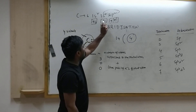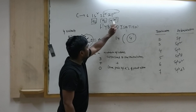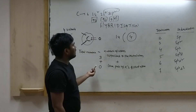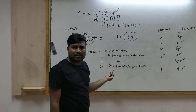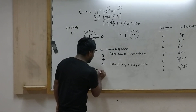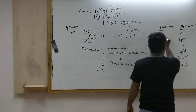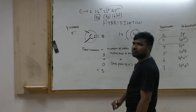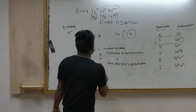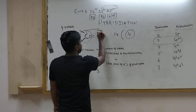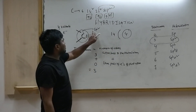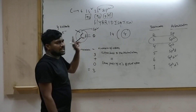Since all valence electrons are used for bond formation, there are no remaining lone pair electrons. So the total number is 3 plus 0 equals 3. If the total number is 3, hybridization is SP2. Therefore, the hybridization of carbonyl carbon is SP2.